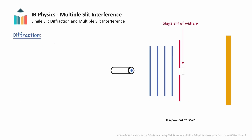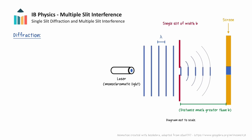Let's begin with the following setup. We have a laser that emits monochromatic light of wavelength lambda, represented by this set of blue plane wavefronts. These wavefronts pass through a single rectangular slit of width b, and we will observe the pattern produced on a screen that is at a distance much larger than the width of the slit. Instead of the light passing straight through and showing a single bright band, we find that the light waves are diffracted by the slit.